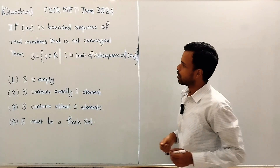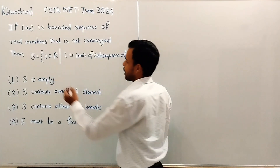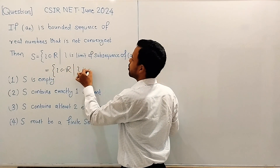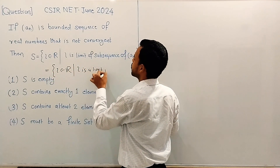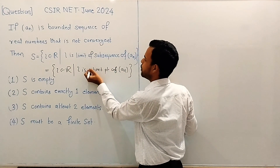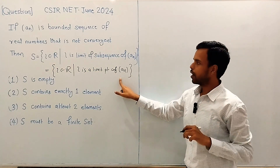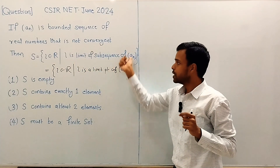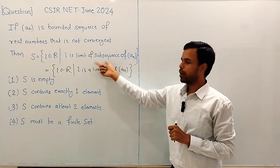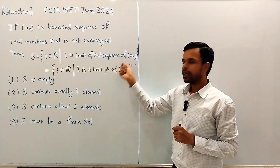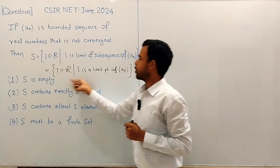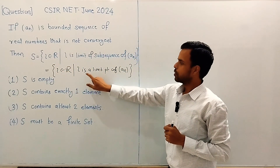Let us begin the solution. Let us first see what the set S is. S is the set of L belonging to R such that L is a limit point of sequence A, because we know that every sub-sequential limit of sequence A_n is nothing but a limit point of A. So basically, S is the set of limit points of sequence A.